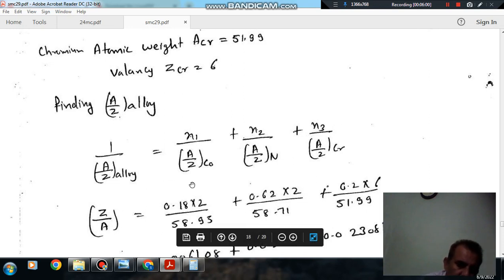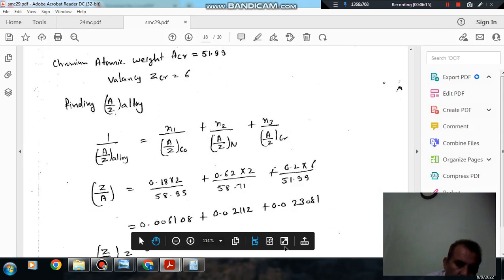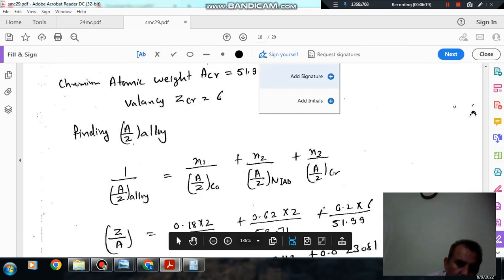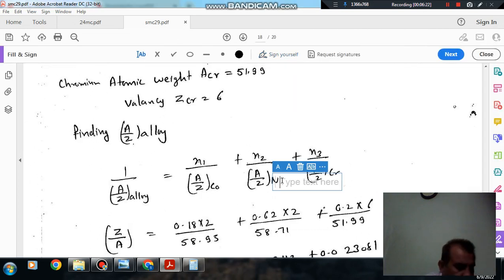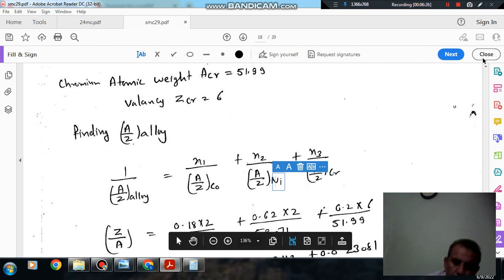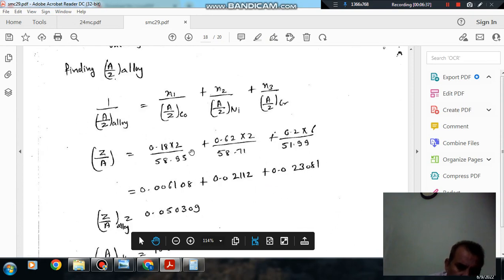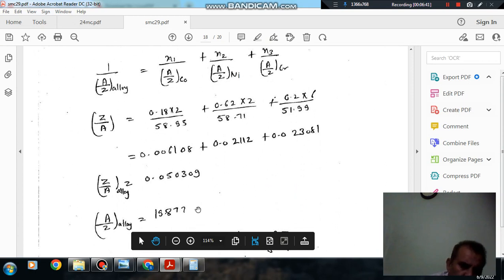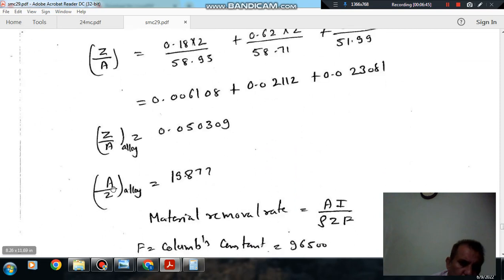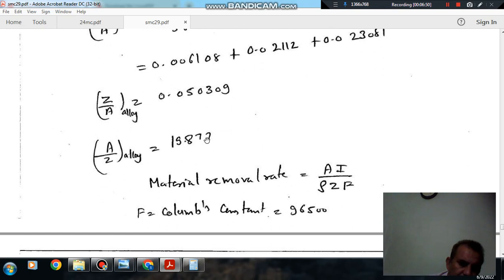X1 is 0.18 and A for cobalt is 58.93 and Z is 2. Similarly for nickel it is 0.62, A is 58.71 and Z is 2. And for chromium it is 0.2, A is 51.99 and Z is 6. So now from this we can calculate, so Z by A comes out as 0.05030. So A by Z alloy comes out as 19.877.